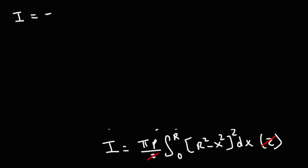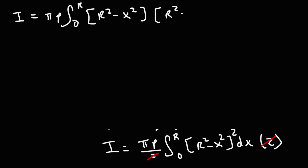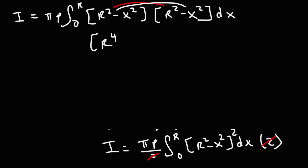The inertia is πρ times the integral from 0 to R. I'm going to expand (R² − x²)², writing it out and FOILing: R² · R² = R⁴, then −R²x² − R²x² = −2R²x², and (−x²)(−x²) = +x⁴. So the expanded integrand is R⁴ − 2R²x² + x⁴.